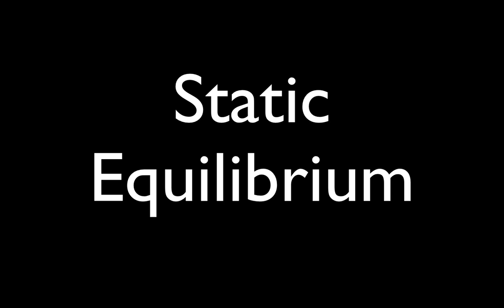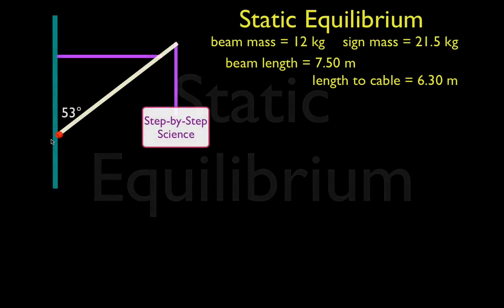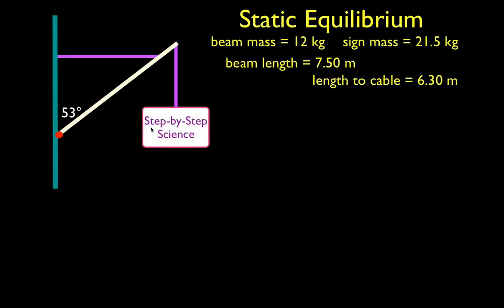In today's video, we're going to go over a problem involving static equilibrium. We have the Step-by-Step sign, which has a mass of 21.5 kilograms, hanging by a cable attached to the beam. The beam has a mass of 12 kilograms and is 7.5 meters long, and it makes an angle with the wall of 53 degrees.